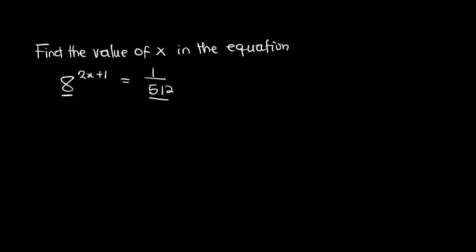Before we actually do that, we can rewrite everything as 8 raised to the power 2x plus 1 is equal to 512 raised to the power negative 1. To convert 512 into 8 raised to the power something: 8 times 8 times 8, or 8 raised to the power 3, will give us 512.